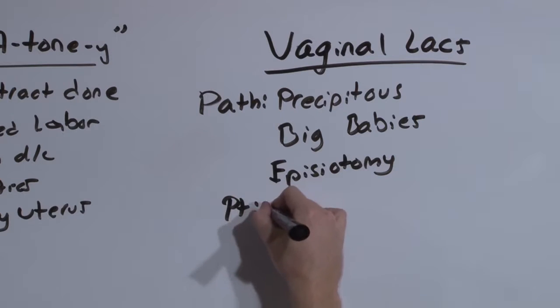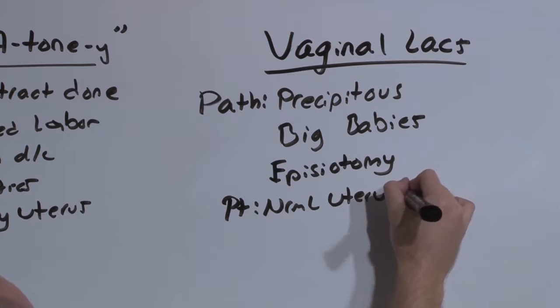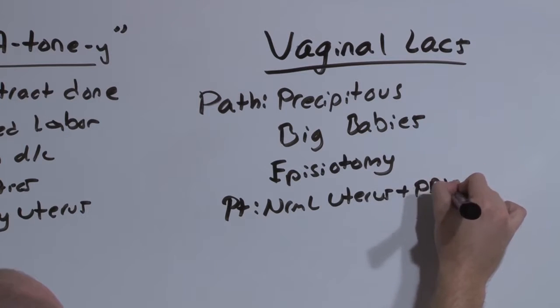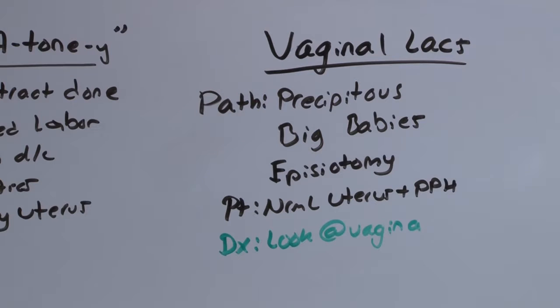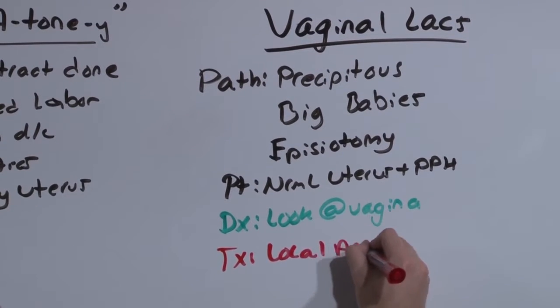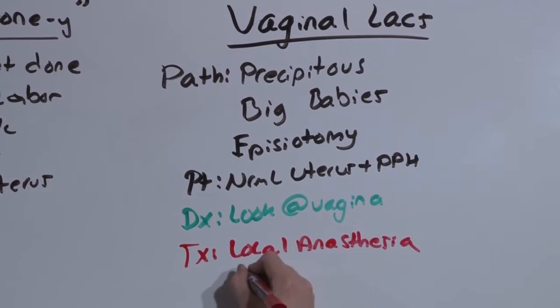The patient is going to have a normal uterus despite postpartum hemorrhage. And you're going to diagnose it, and you're going to do this for every delivery, every time. You're simply going to look at the vagina and you're going to see the lacerations or the site of bleeding. And because this is a laceration, it's going to require surgery. That is, you're going to give local anesthesia and suture it shut.